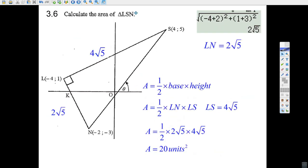Now the next question says calculate the area of the triangle LSN. Well, it's a nice right angle triangle, so this part here, 4 root 5, that we worked out before. We knew already that SL is 4 root 5, I think it was the first question we worked on.